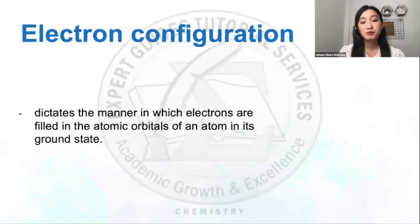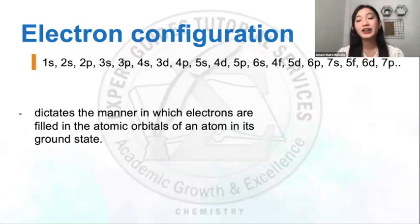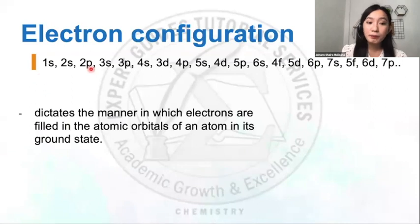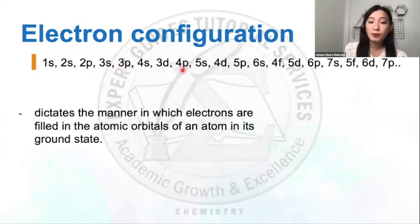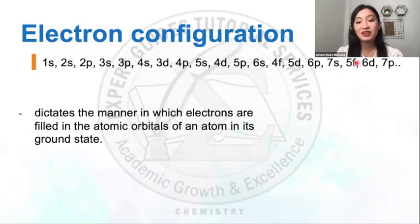Now let's proceed to the electron configuration. There is a very long list we need to follow for the correct order: 1S, 2S, 2P, 3S, 3P, 4S, 3D, 4P, 5S, 4D, 5P, 6S, 4F, 5D, 6P, 7S, 5F, 6D, 7P, and the list goes on.